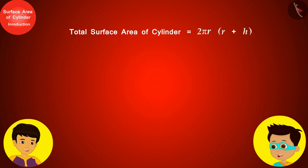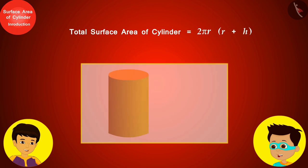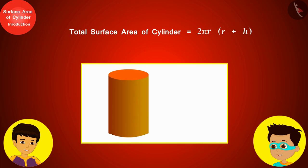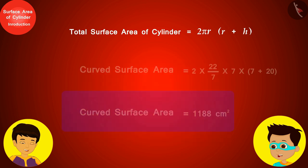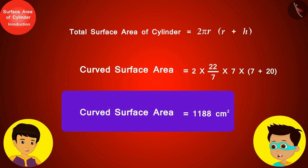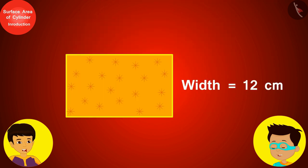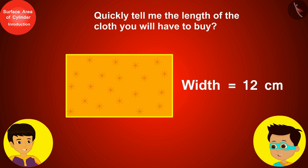Now let us find the area of the cloth using this formula. The radius of my mother's box is 7 centimeters and the height is 20 centimeters. The total surface area comes to 1188 square centimeters. If you buy a rectangular cloth of 12 centimeters width, quickly tell me the length of cloth you will need to buy.